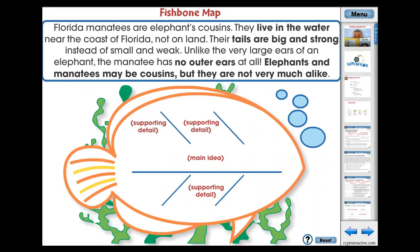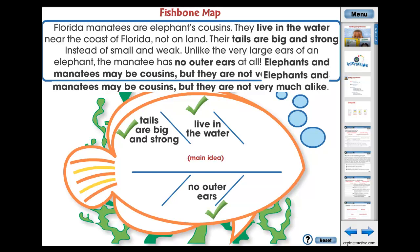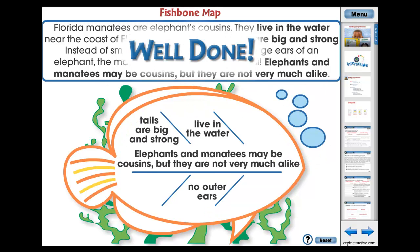The Fishbone Map graphic organizer is an engaging app to support the comprehension of the content in the reading passage. Students are given a paragraph on manatees and must complete the graphic organizer to identify the main idea and supporting details.